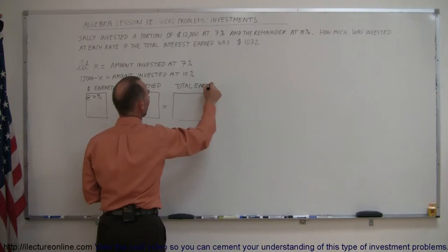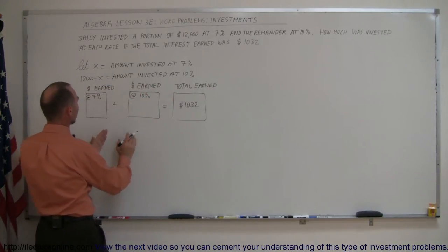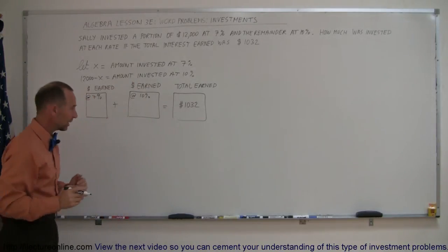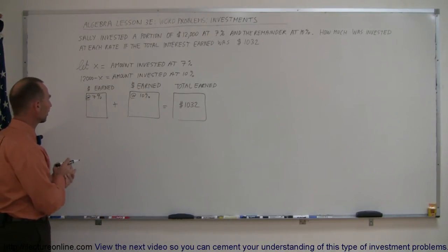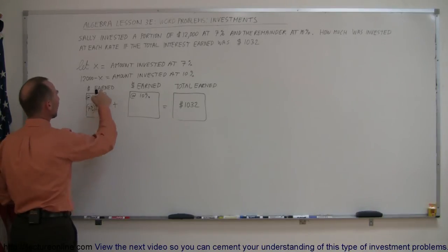And we were told in the problem that the total earned was $1,032. So the amount of dollars earned at 7% plus the amount of dollars earned at 10% equals the total amount of money earned. And how do you calculate the amount of money earned at 7%? Well, we multiply the interest rate, the rate of return, 7%, times the amount invested at that rate, which was X.